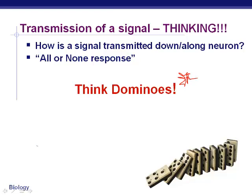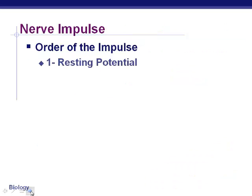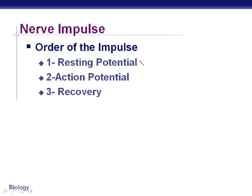In order to get from one end of the neuron to the other, once the signal starts it will not stop until it reaches the very end. We call this an all-or-none response — it either triggers and the impulse is sent, or it doesn't. It doesn't go part way and stop. The steps we need to know are: resting potential, action potential, and then recovery.